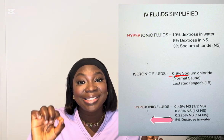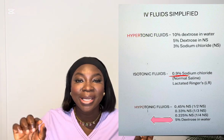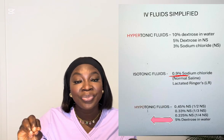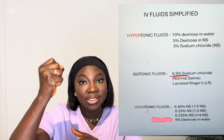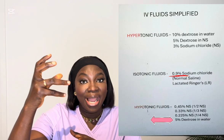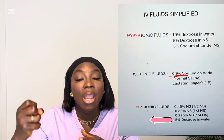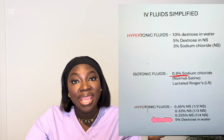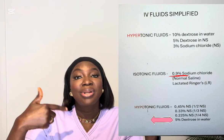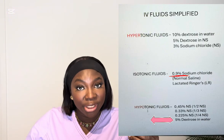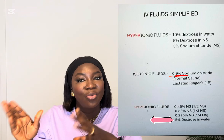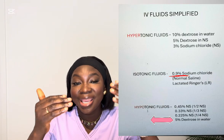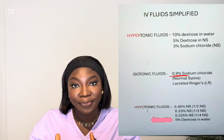There is an exception: 5% dextrose in water. It is isotonic in the bag — equal concentration in the bag. But once it's infused in the body and starts metabolizing, it becomes hypotonic. So 5% dextrose in water is both isotonic and hypotonic.